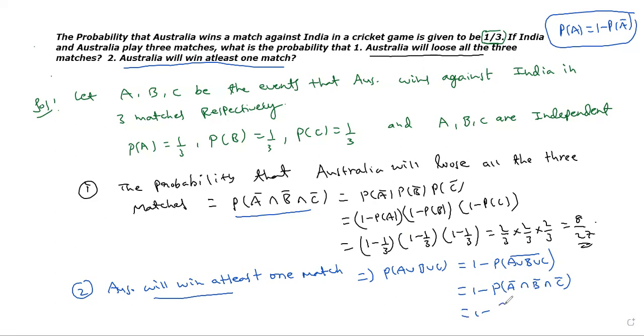So, 1 minus 8 by 27. Twenty-seven is the LCM. Twenty-seven minus eight, which is 19 by 27.